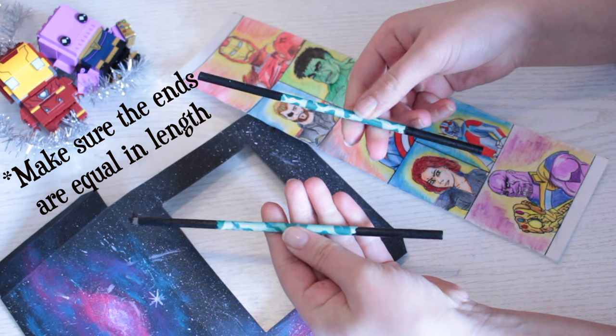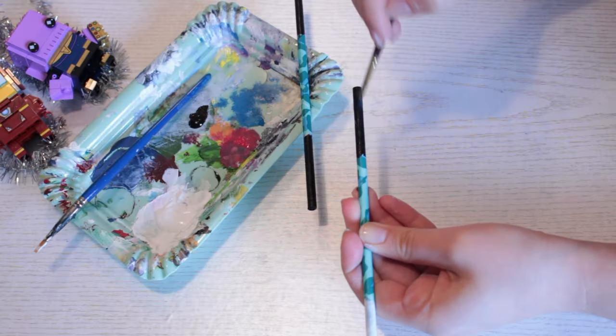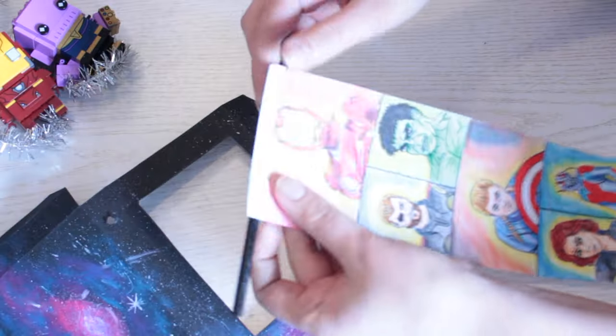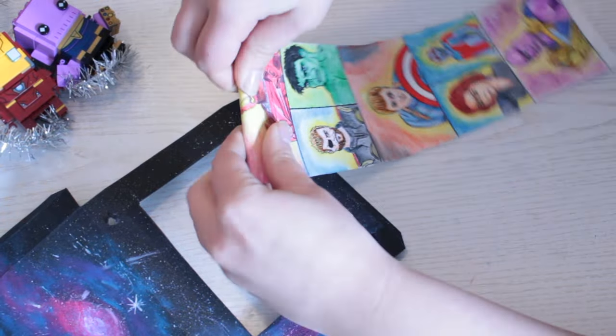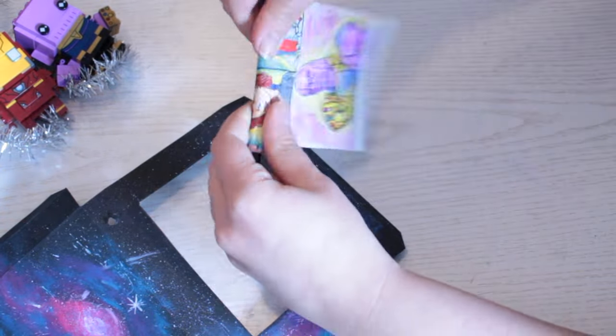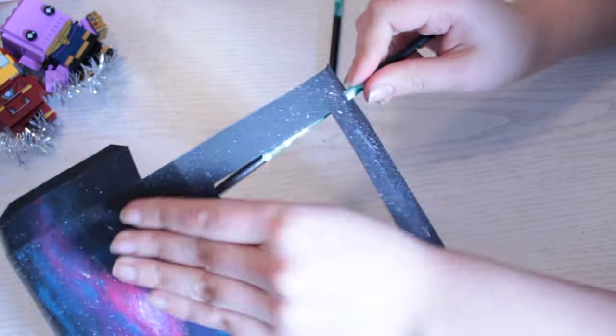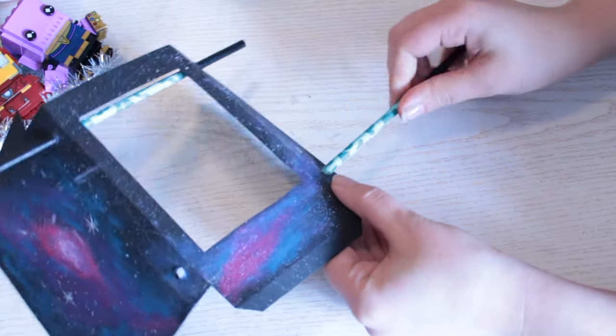I even painted the ends of the straws so the colors match the card. Now take your strip, place it on the straw, and roll it very tightly onto it. Then take your straws and push them through the holes of the card.